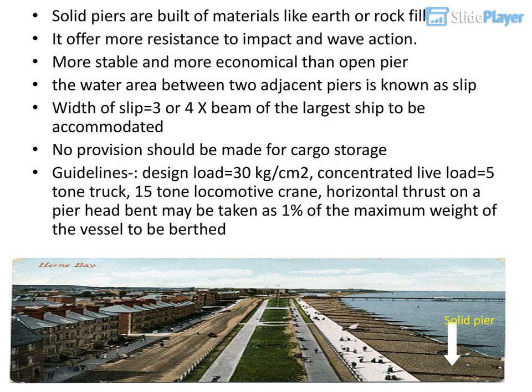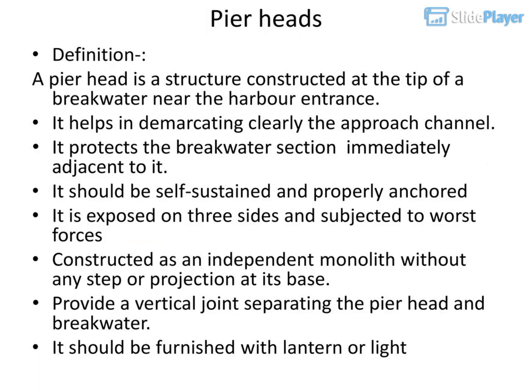Solid piers are built of materials like earth or rock fill; they offer more resistance to impact and wave action, and are more stable and economical than open piers. The water area between two adjacent piers is known as a slip. Width of slip equals 3 or 4 times the beam of the largest ship to be accommodated. No provision should be made for cargo storage. Design guidelines: design load = 30 kg/cm²; concentrated live load = 5-tonne truck or 15-tonne locomotive crane; horizontal thrust on a pier head bent may be taken as 1% of the maximum weight of the vessel to be berthed.